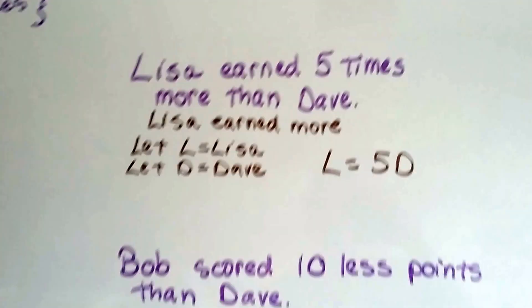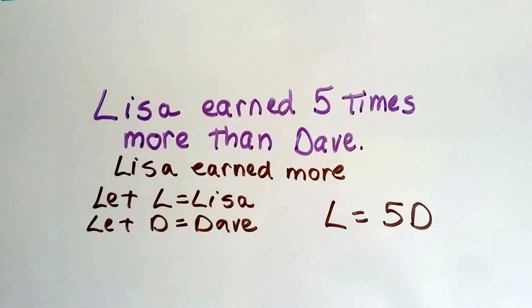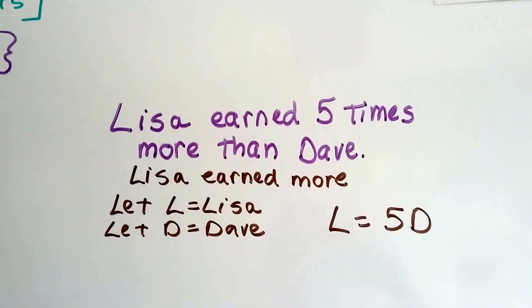Let's try one more. Lisa earned 5 times more than Dave. Okay, so we know Lisa earned more, right? 5 times more.